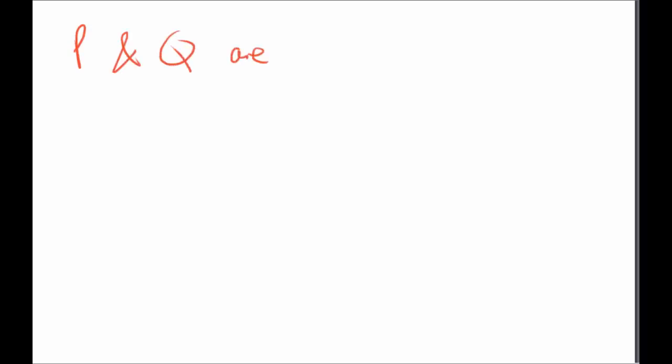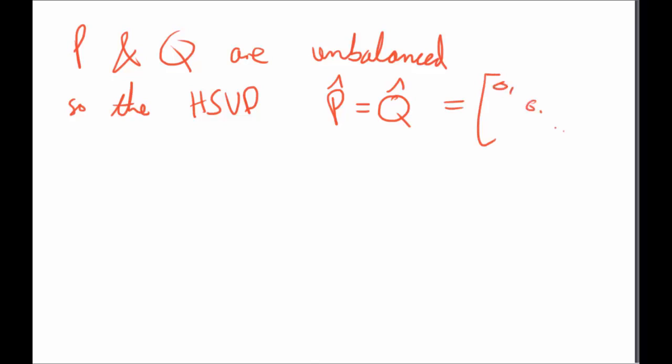From here, we know that P and Q are unbalanced. So this is the whole point of the HSVD, the Hankel singular value decomposition. We're trying to get P and Q into a balanced state. So for this to be balanced, it has to be a diagonal matrix and they have to be equal to each other, as shown here. This is ideally what we're trying to solve in the future.